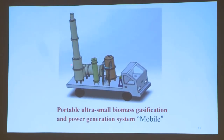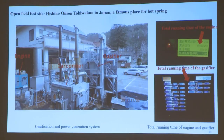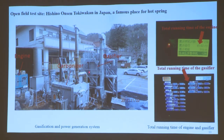The main purpose of our system is to realize mobile capability, meaning the whole system can be transferred to the desired location as needed. The third part covers the 100-hour operation. The open field test site was chosen at a famous hot spring hotel in Japan. Here you can see the engine, the carbonizer, the gasifier, and the carbonized pellets for gasification, along with the running time of the engine and gasifier.